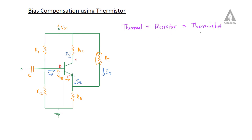Now, there are two types of thermistors: the negative temperature coefficient thermistor and the positive temperature coefficient thermistor. In an NTC thermistor, the resistance value decreases when temperature increases. In a PTC thermistor, the resistance value increases when temperature increases. We use the NTC thermistor, that is, the negative temperature coefficient thermistor.